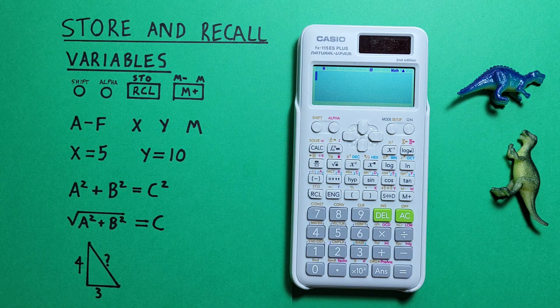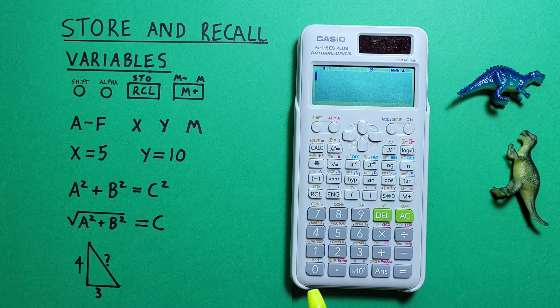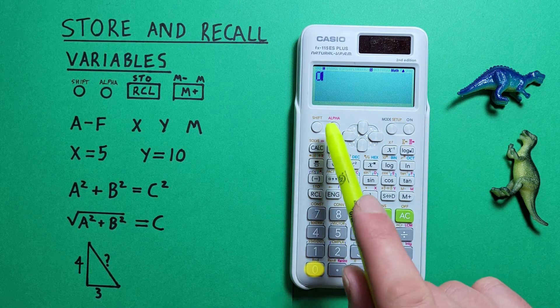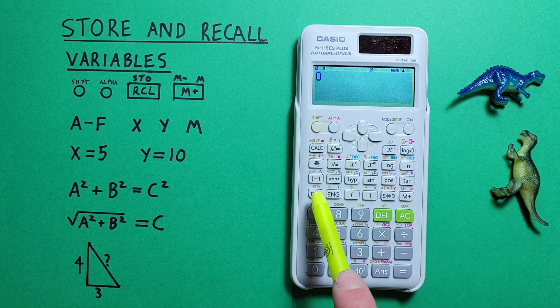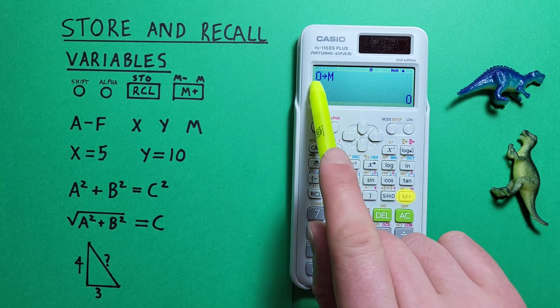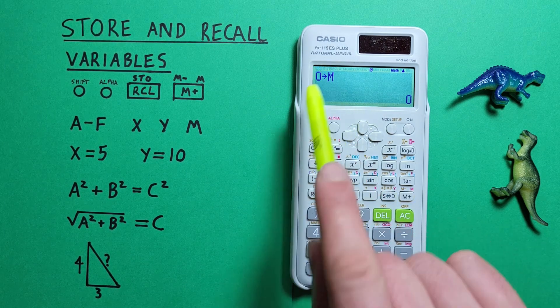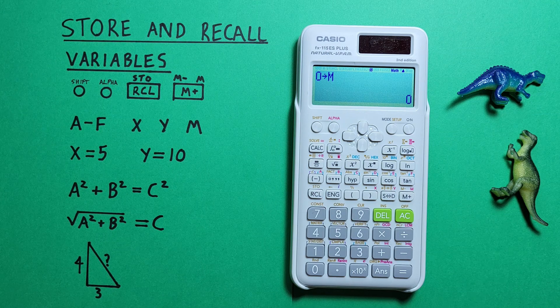If we want to clear that, we can do that by storing 0 into our m slot. So if we go 0, shift, store, and m. There we go, 0 into m. We notice that m on the top of our screen has now disappeared, and we have nothing stored in our m slot.